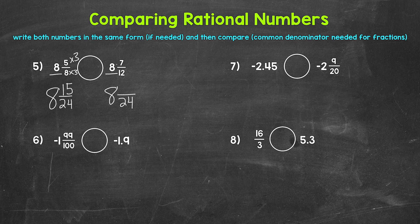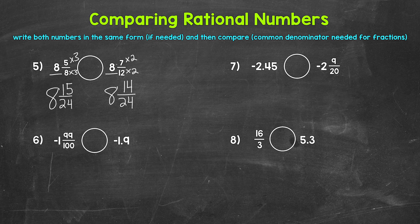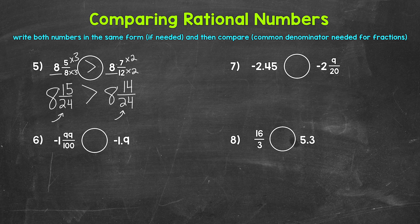Now let's rename eight and seven-twelfths. Twelve times two is twenty-four, and seven times two gives us a numerator of fourteen. So eight and fourteen twenty-fourths is equivalent to eight and seven-twelfths. Now that we have a common denominator, these fractions are much easier to compare: fifteen twenty-fourths is greater than fourteen twenty-fourths. So eight and five-eighths is greater than eight and seven-twelfths. The main takeaway: when comparing fractions, make sure you have a common denominator.